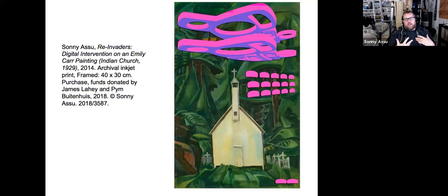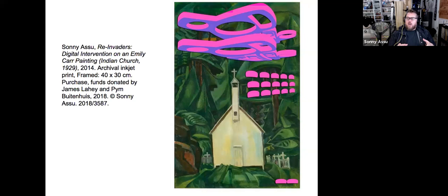A lot of the images I was placing over top in these digital interventions are ovoids, S-forms, and U-shapes — all around the conversation of form line on the Northwest Coast. I wanted to use them as tags on top of these Emily Carr paintings to say that we are here, we were never gone. In a way I was inspired by graffiti and the conversations that graffiti brings to the public. Initially I placed these tags on top of Carr's paintings as a way of saying what she was doing was wrong, so I'm putting my own style of work on top of it.